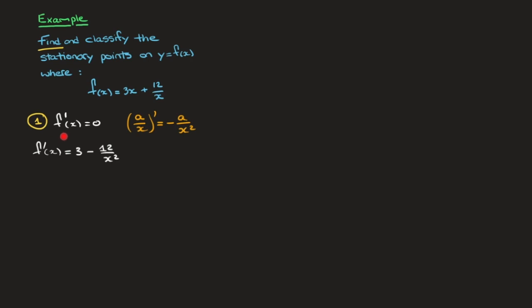We have to solve f'(x) = 0, which is the same as solving 3 − 12/x² = 0. To solve this equation, I'm going to write the entire left-hand side over x². Multiplying 3 by x², this turns into (3x² − 12)/x² = 0. The only way this fraction equals 0 is if the numerator equals 0 — the denominator plays no part. So solving this is the same as solving 3x² − 12 = 0.